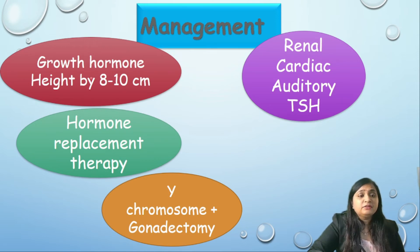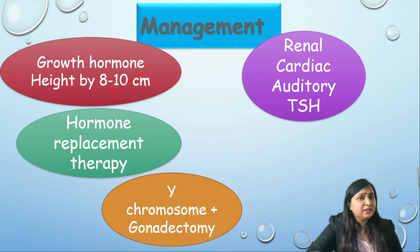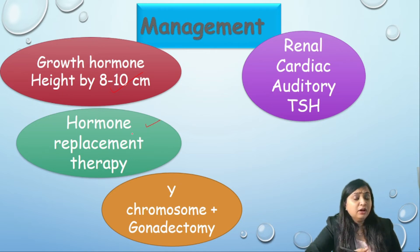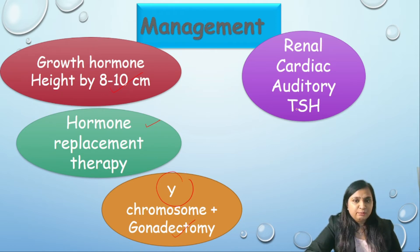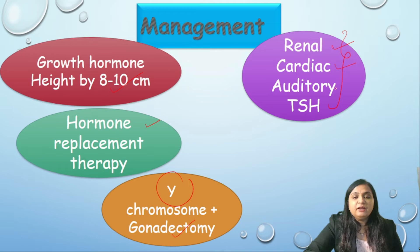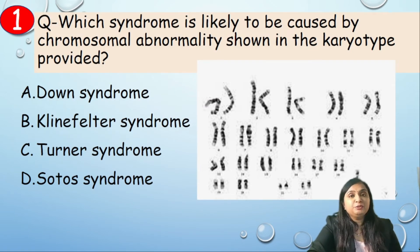Regarding management: administration of growth hormone is approved by the FDA for patients with Turner syndrome and can increase height by 8 to 10 centimeters; however, they may still be 10 to 15 centimeters less than adult height. Hormonal replacement therapy with estrogen and progesterone can allow proper puberty and reduce many other symptoms. If a Y chromosome is present on karyotyping, gonadectomy is advised. Regular screening of renal, cardiac, auditory function, and hormones — particularly TSH — should be done.